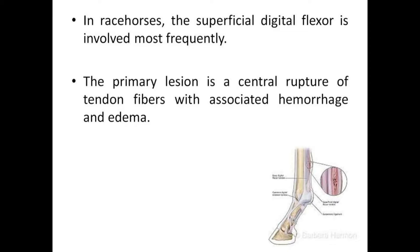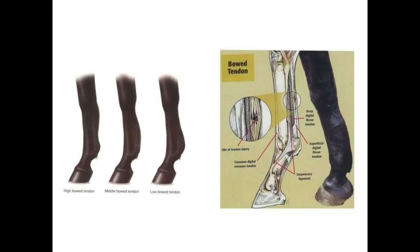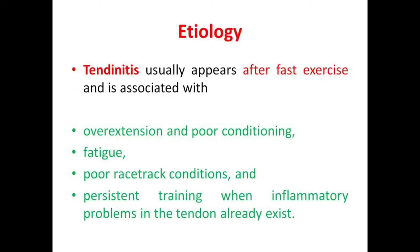There are three types of bow tendon: high bow tendon, middle bow tendon, and low bow tendon, based on the location of the lesion. You can see the site of tendon injury in the picture on the right side.